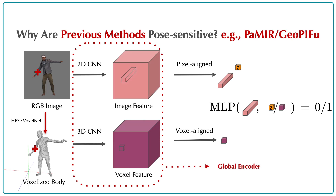All these encoders are applied to the full image or entire voxel space. Due to their large receptive fields, the extracted features are sensitive to global pose. During inference, the network sees poses that differ from the training poses. Such global pose differences may lead to a dramatic change of pixel-aligned or voxel-aligned features, leading to poor reconstruction.